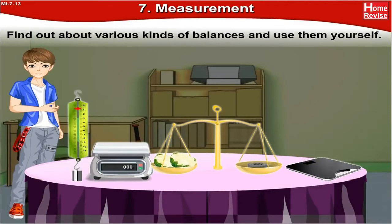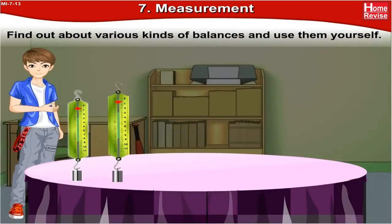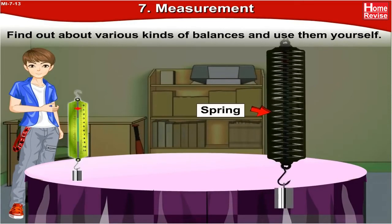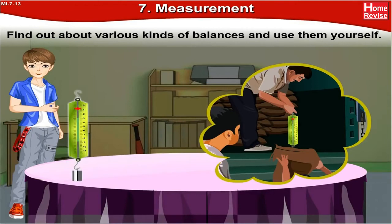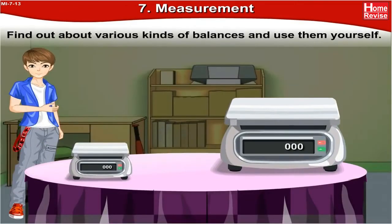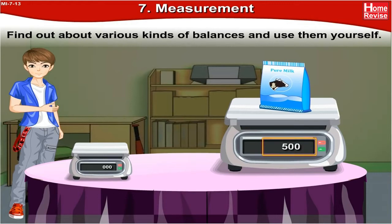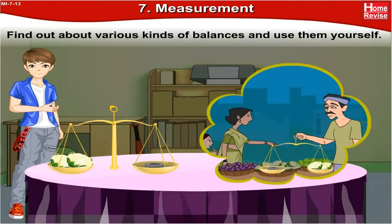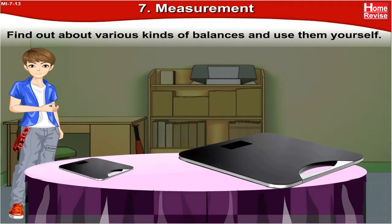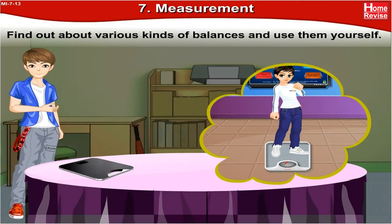Find out about various kinds of balances and use them yourself. First, the spring balance — it has a spring inside and is used to weigh a sack of food grains. Next, the electronic or digital balance — digital numbers appear on it after keeping a weight on it. The common balance is found at fruit and vegetable sellers' shops. And lastly, scales for body weight — the kind you use when weighing yourself.